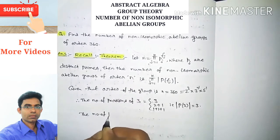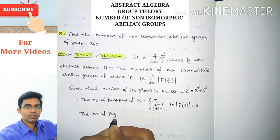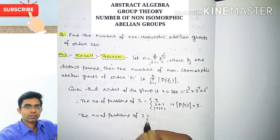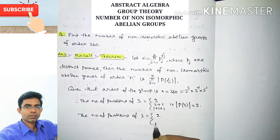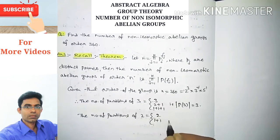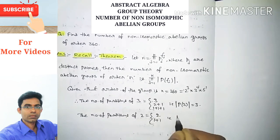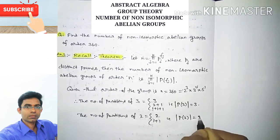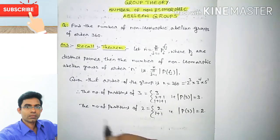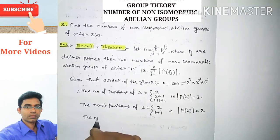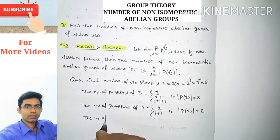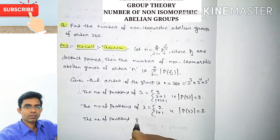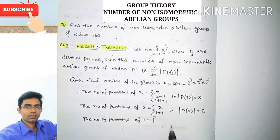The partitions of 2 are: 2 itself, and 1 plus 1. So the total number of partitions of 2 is 2. The number of partitions of 1 is equal to 1.